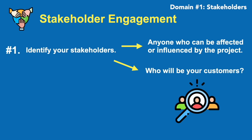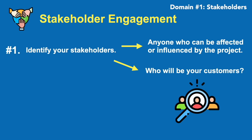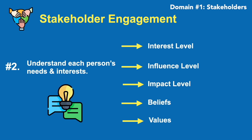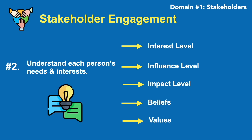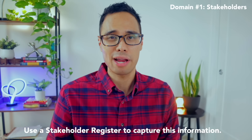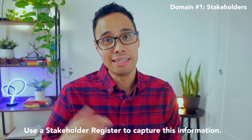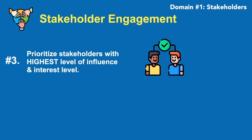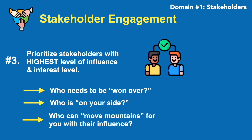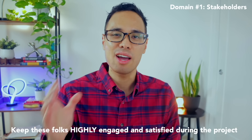Step one: identify your stakeholders — anyone who can be affected or influenced by your project's objectives, including your team and the customers who will use your end product. Step two: understand what their needs and interests are. Analyze each stakeholder by considering their interest level, influence level, impact, values, and beliefs. Document this in a stakeholder register and keep it confidential — for your eyes only. Next, prioritize stakeholders who have the highest level of influence and interest. Is there anyone who is not supportive of your project that you might need to win over? It's your goal to keep these folks highly engaged and satisfied.